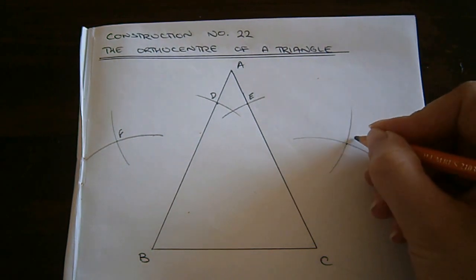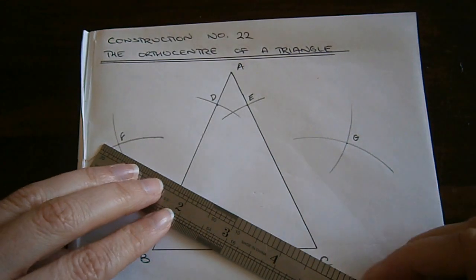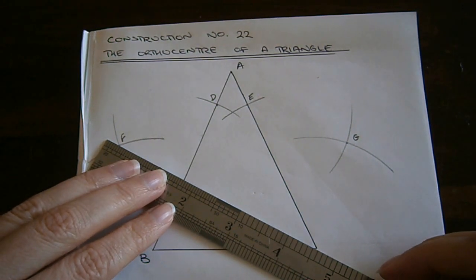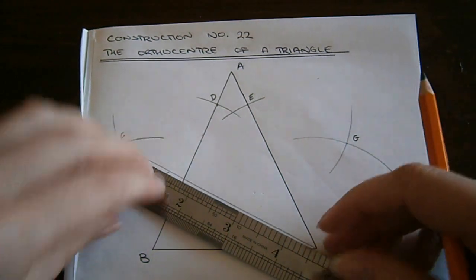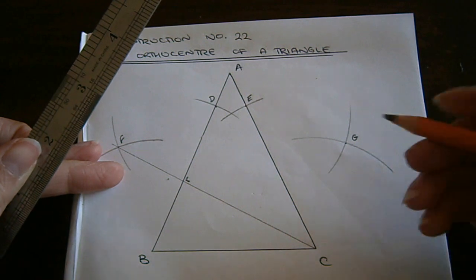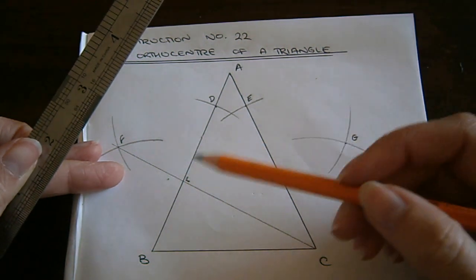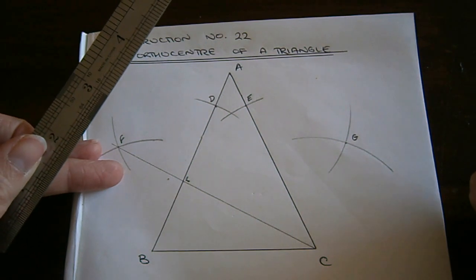Let's call this point G. I join F to C. And what I get is a right angle here at AB. And this line from C to AB is what's known as an altitude of the triangle.